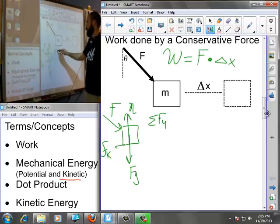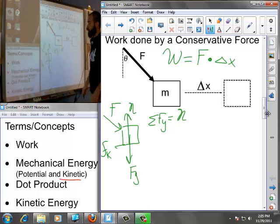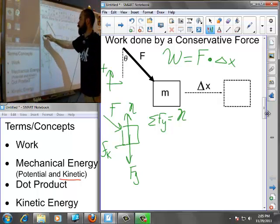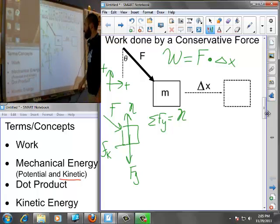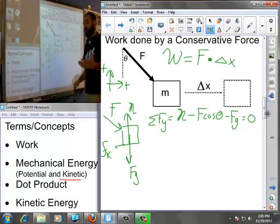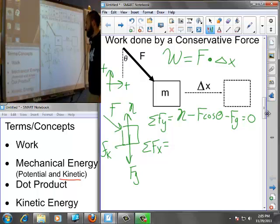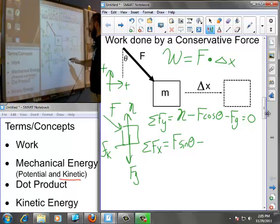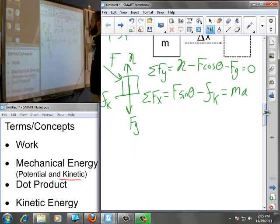We have some force F at an angle, a force of gravity, normal force working from the surface upwards, and friction always opposes the motion, so it must be pointing backwards. My net forces in the y direction: normal force upwards, F cosine portion pushing down, and gravity pushing down sum to zero. In the x direction, F sine theta is opposed by kinetic friction and must equal Ma.